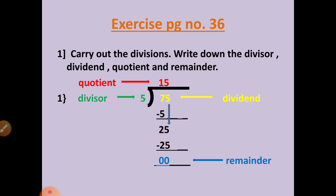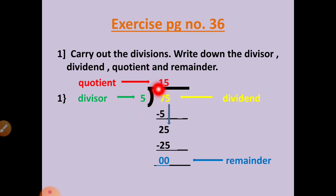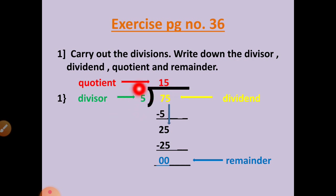So in the table of 5, if we read the table 15 times, the number 75 will come. This number 15 is called the quotient, and 0 is called the remainder.